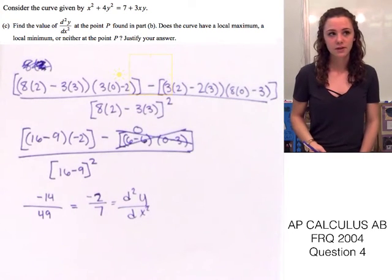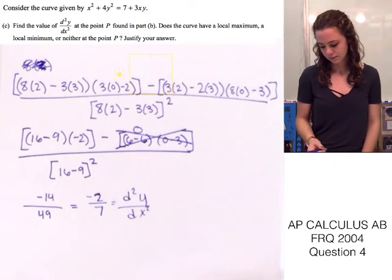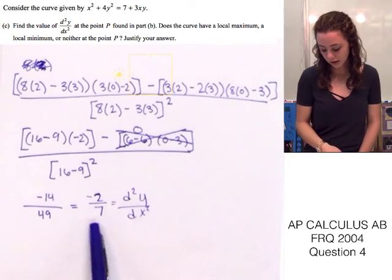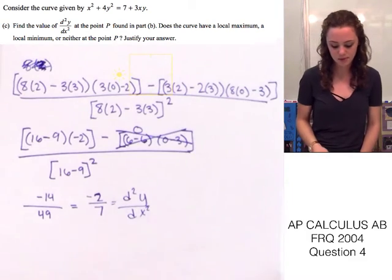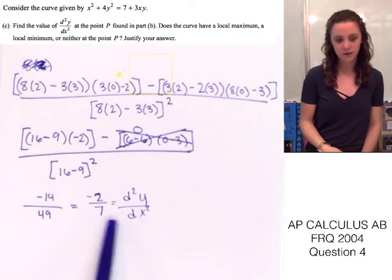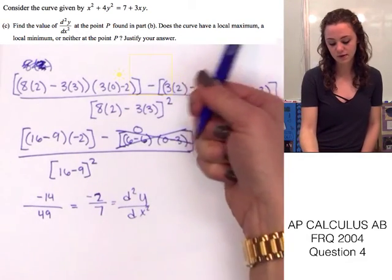So it's negative 2 over 7. So using the second derivative test, or the second derivative rule, we can conclude that this curve has a local maximum at P, because the second derivative is negative, and the first derivative is 0.